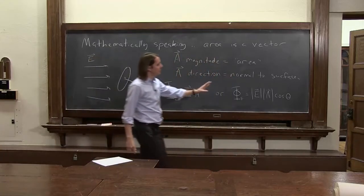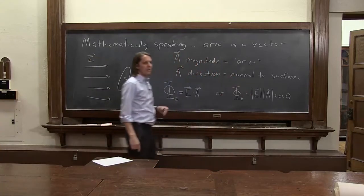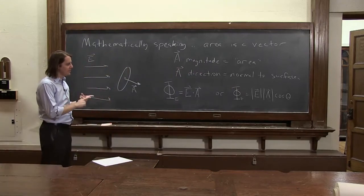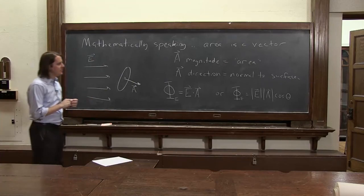This is sort of the more intuitive example of how to think about flux. This captures all the things I said before: magnitude of e, the size, and the angle. So let's look at a few cases.